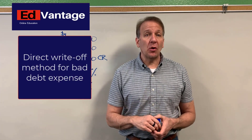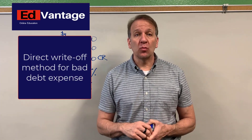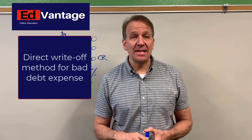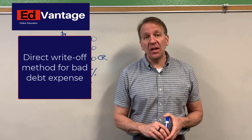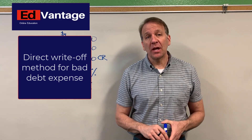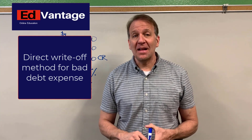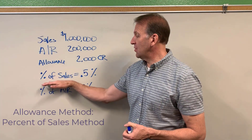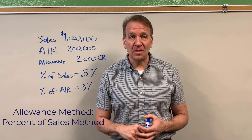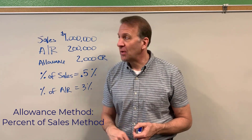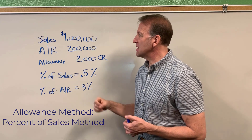In the previous video, we went over bad debt expense and the writing off of bad debts, accounts receivable. In this video, we're going to be looking at the allowance method — specifically the percent of sales associated with the allowance method. Here's the information that we're going to be using in this video and the next video.